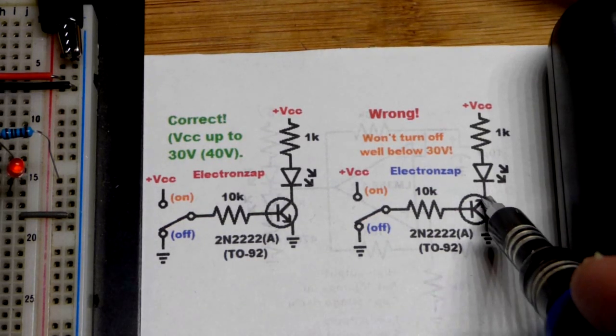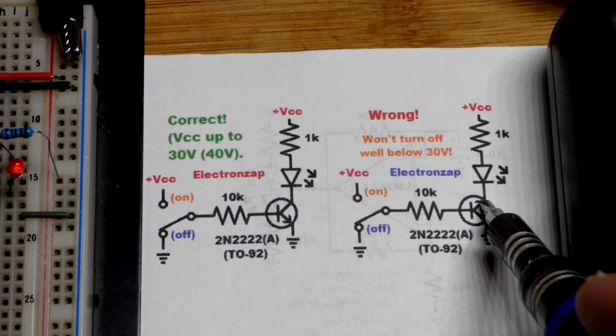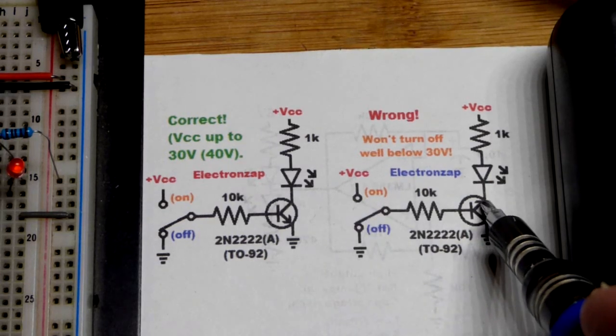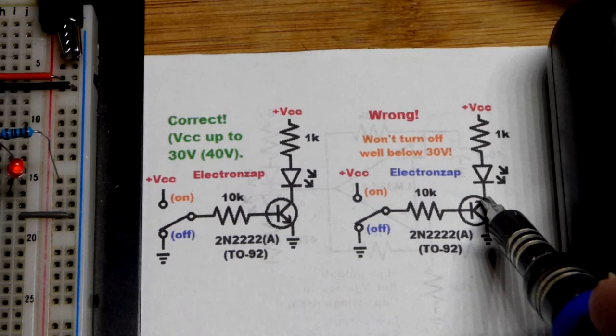So if you put it in backwards, like you see here, emitter, with the 5 volts, which I have right now, it should still work normally. You shouldn't notice a difference. Maybe it's bad for the transistor. I don't know. But in any case, it should work normally.